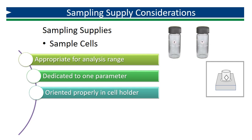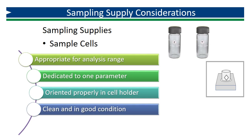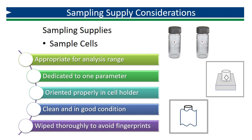Some sample cells have a mark or shape that is intended for consistent orientation. Sample cells should always be kept clean and free from scuffs, scratches, chips, and cracks. If staining or discoloration is present, sample cells can be acid washed with nitric or hydrochloric acid. If any physical imperfections or damage is identified, the sample cell should be replaced. Sample cells should be wiped thoroughly prior to zeroing and analysis to avoid fingerprints and smudges that may affect the measured results.